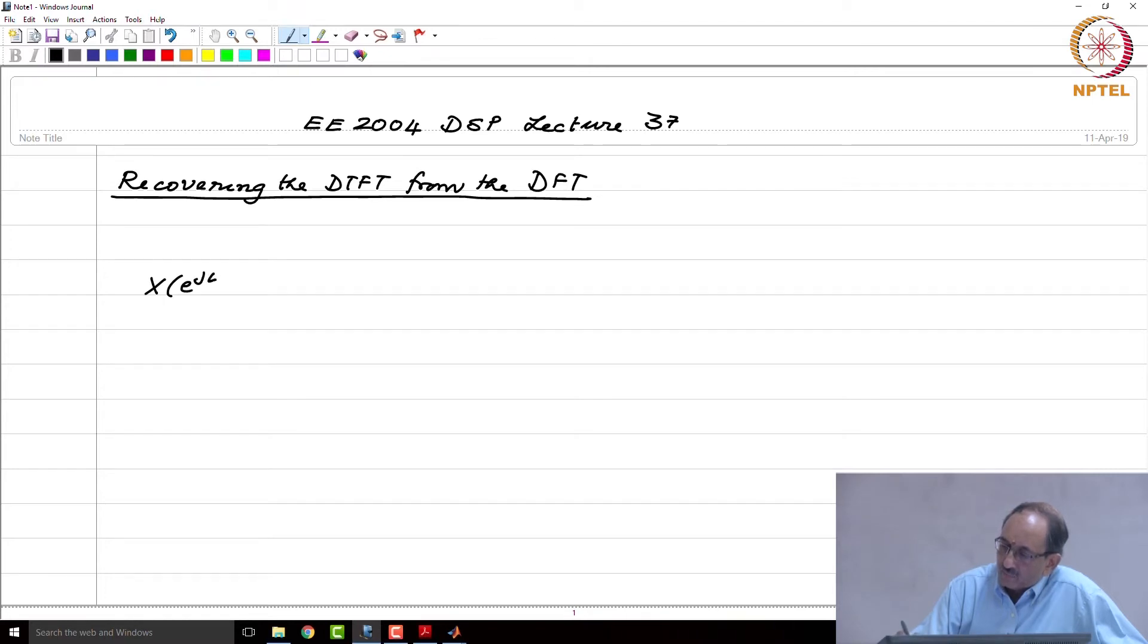So, we have x of e to the j omega. This is n going from 0 to n minus 1, x of n, e to the minus j omega n. Remember, our goal here is to relate the DFT samples and the underlying x of e to the j omega. Right now, you do not see the samples of the DTFT, namely you do not see capital X of k in this.